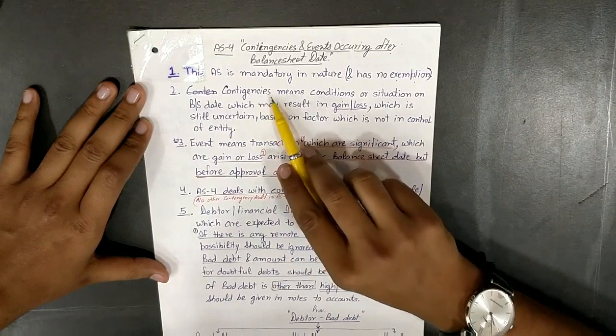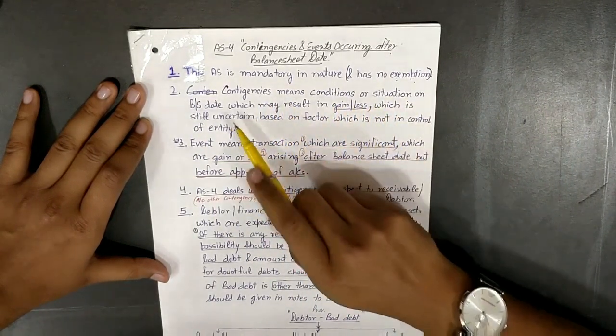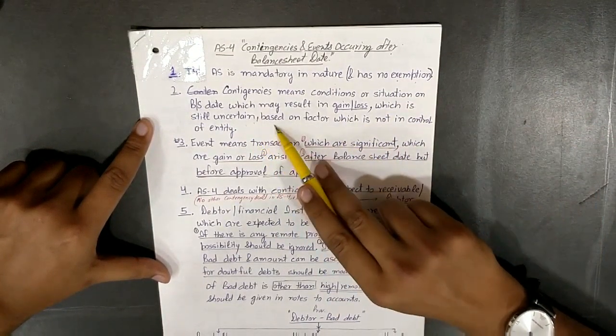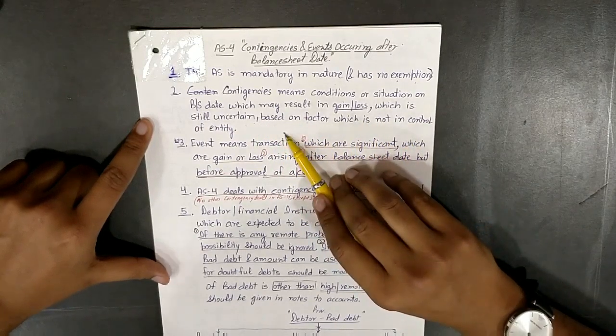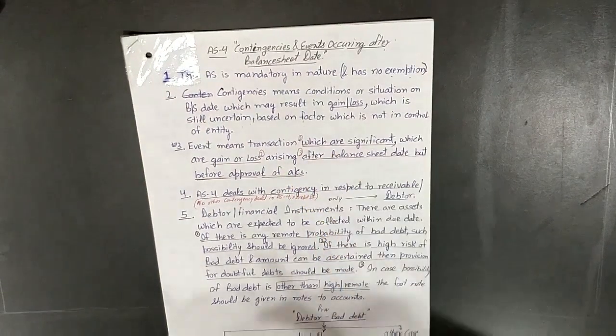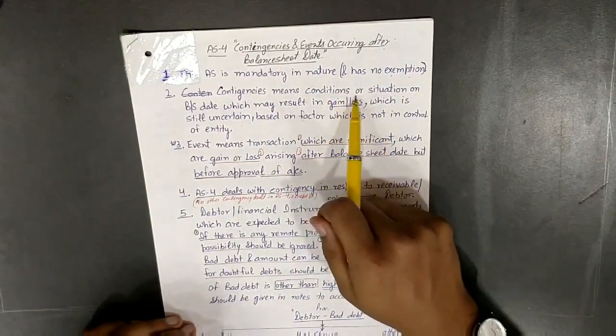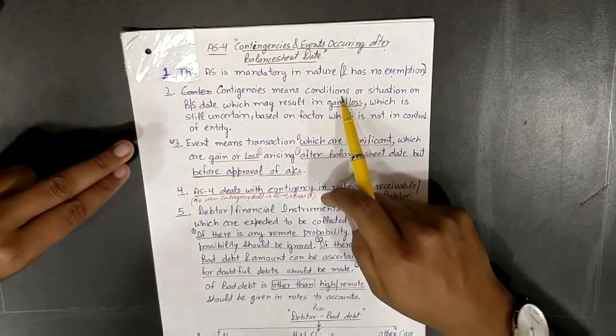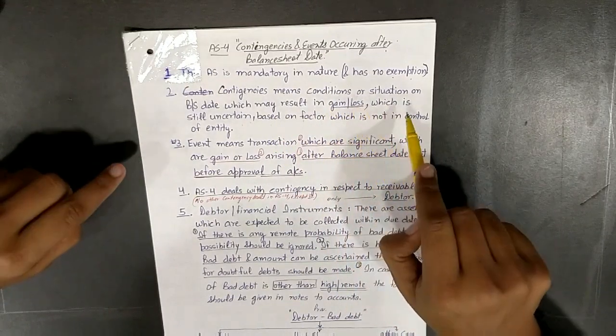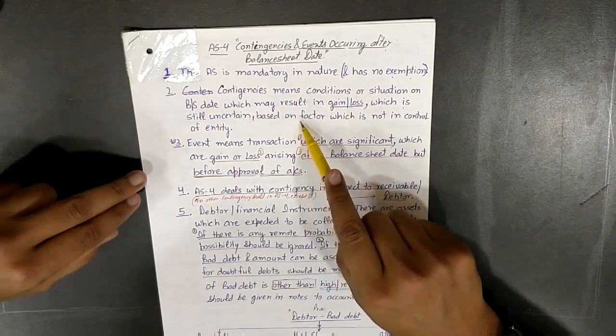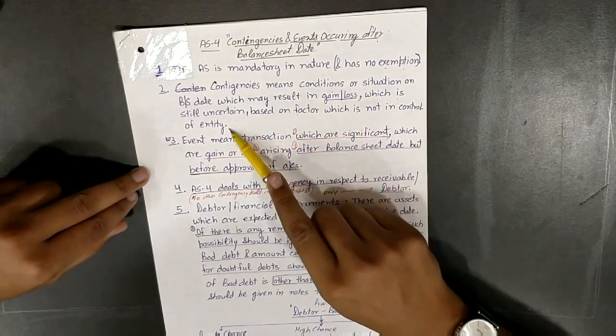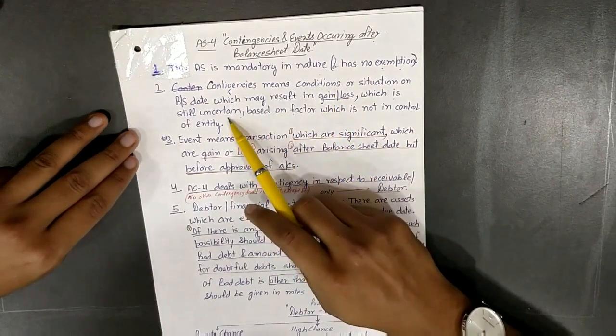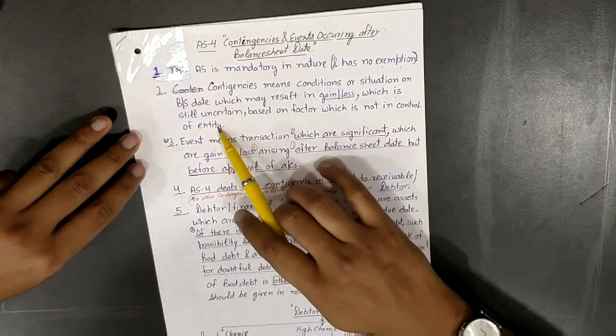Point number two: What is contingency? Contingency means a condition or situation on balance sheet date which may result in gain or loss, which is still uncertain, based on a factor which is not in control of the entity. So there are three basic points: gain or loss, uncertain, and beyond control of the entity.